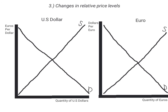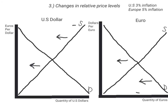A change in relative price levels within a country can also affect the exchange rate. In this scenario, let's say the US is experiencing 3% inflation, while in Europe they are experiencing 5% inflation. Because European goods are now relatively more expensive, demand for the euro is going to shift to the left, as fewer people will be willing to buy goods from them. Meanwhile, the supply of the US dollar will also shift to the left, as fewer people will be providing their money in the foreign exchange market, since buying goods from Europe is now relatively more expensive. As you can see, in this scenario, the US dollar has appreciated, while the euro has depreciated.